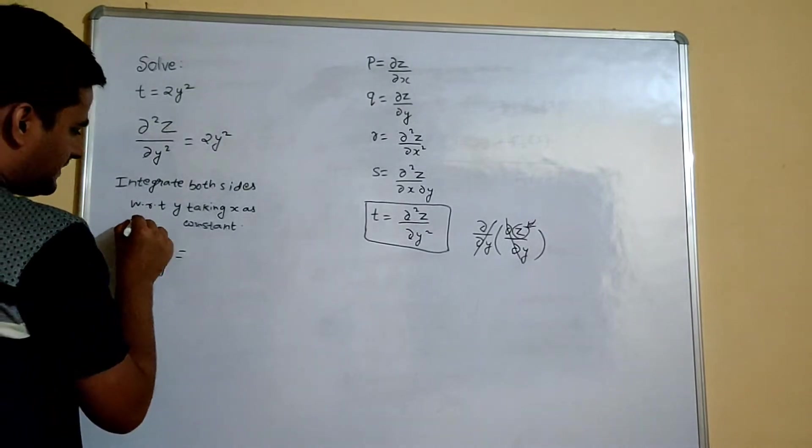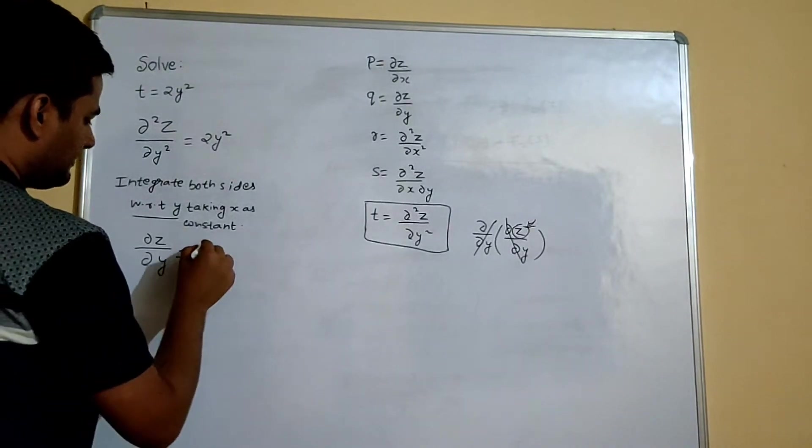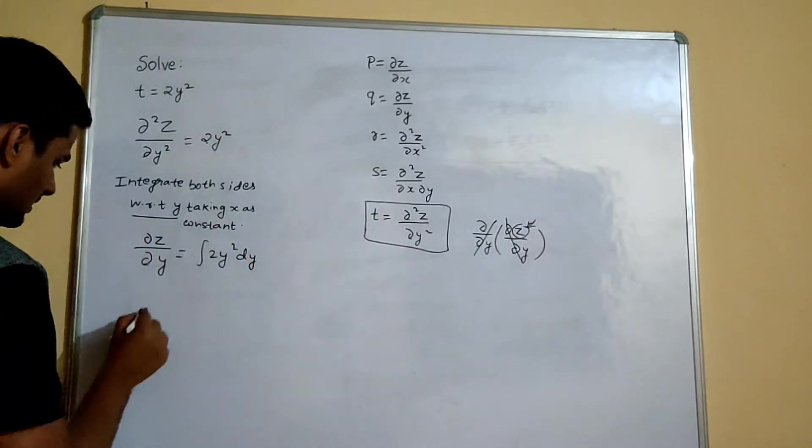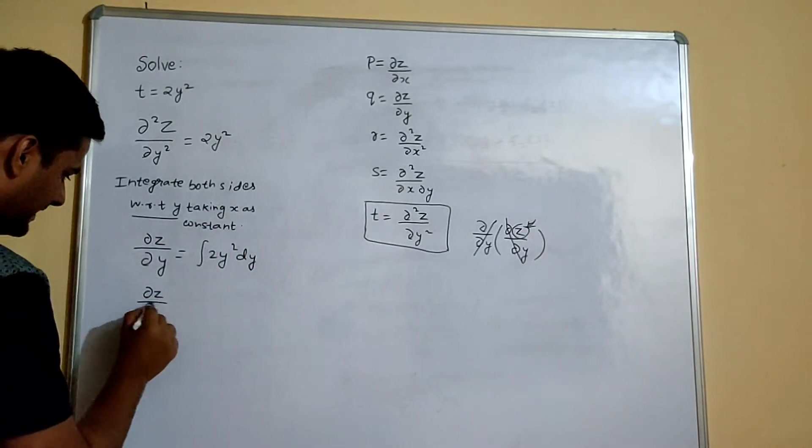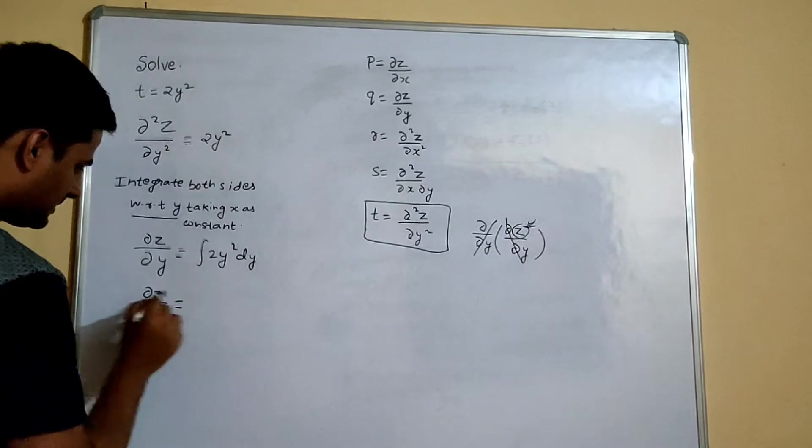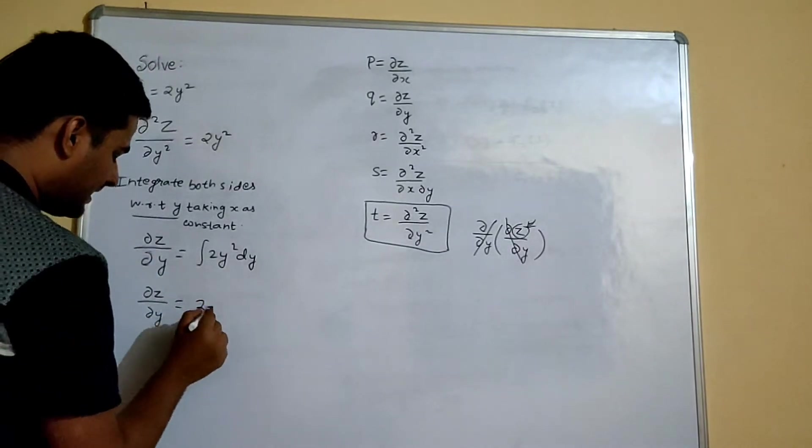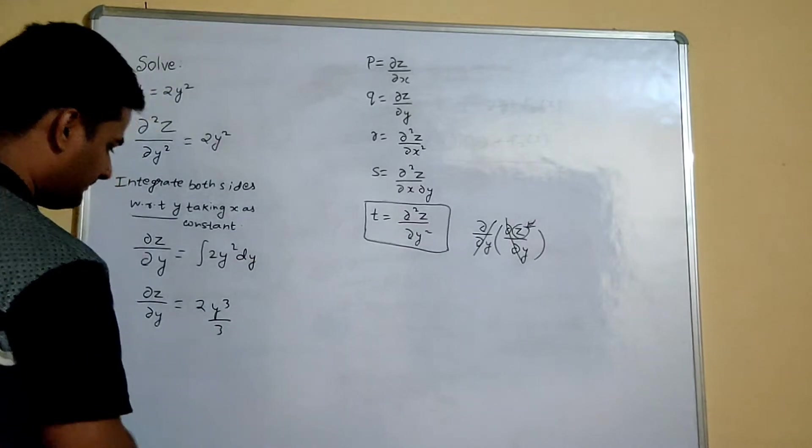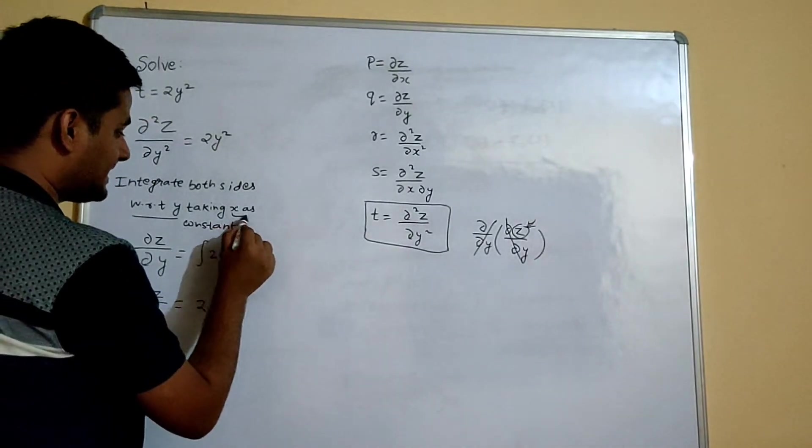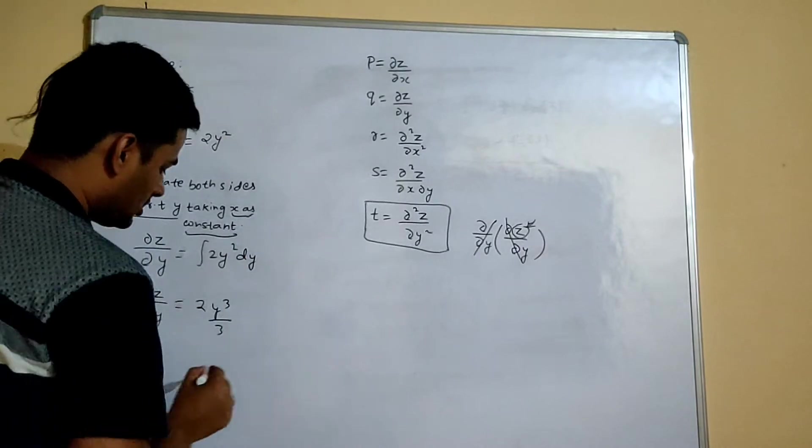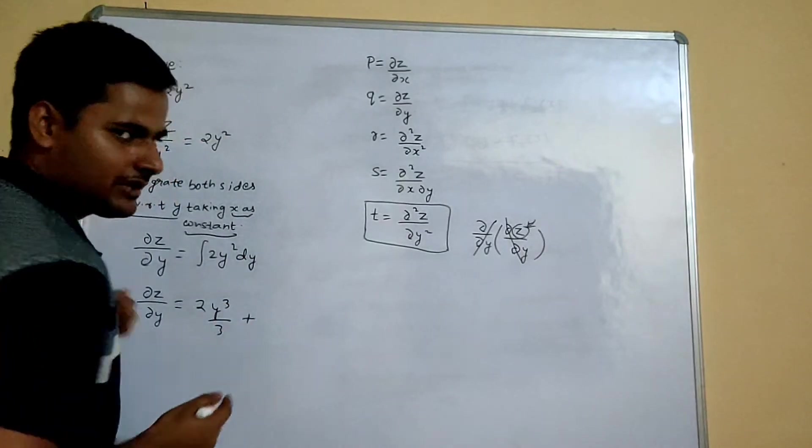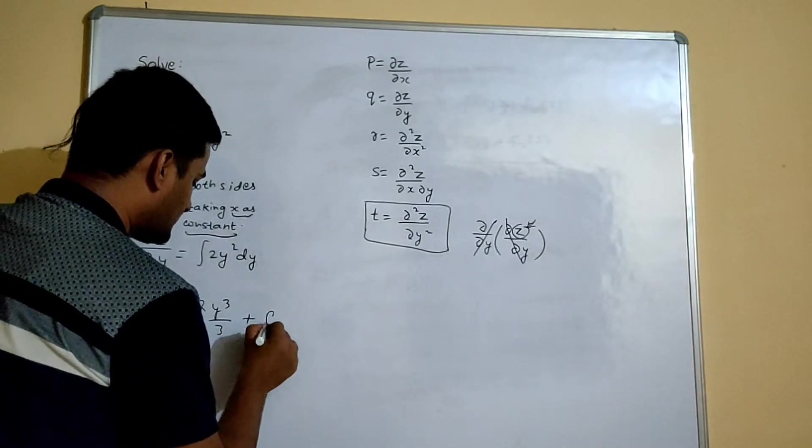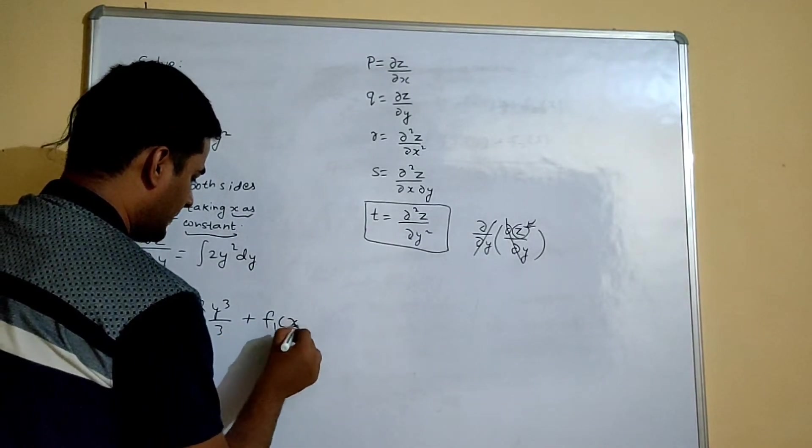Now you are doing integration with respect to y, so it will be integration of 2y square dy. So del z by del y you are getting as 2 will come outside, integration of y square you all know is y cube by 3. Now because x here is constant, so the constant of integration which we always write as c, in this case will be in terms of x, which is f1(x).